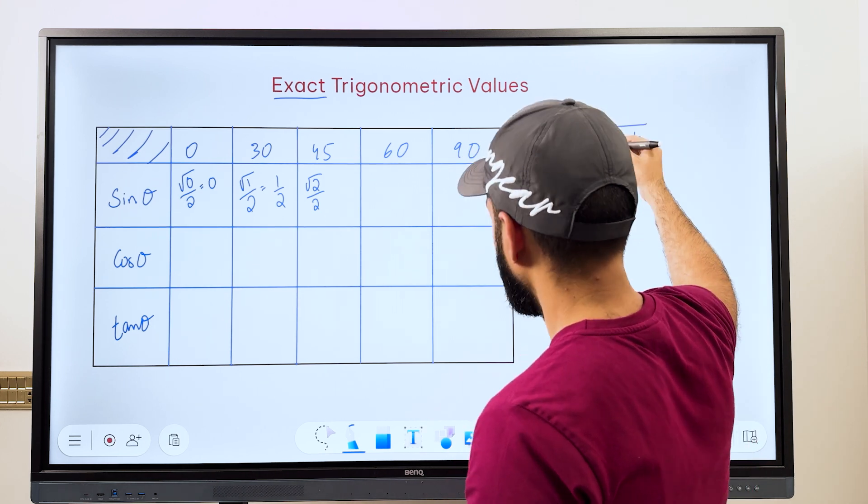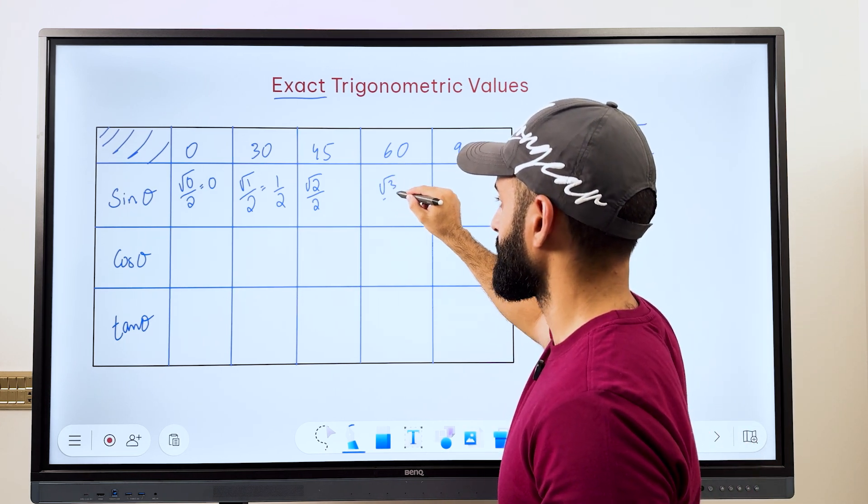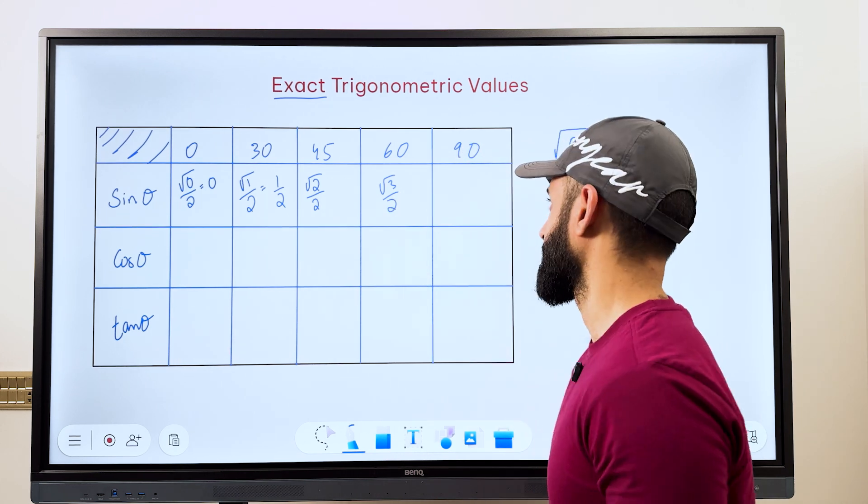For 60, we pick the fourth value which is 3. So root 3 upon 2 and we can't simplify this. So that's it, that's your answer.